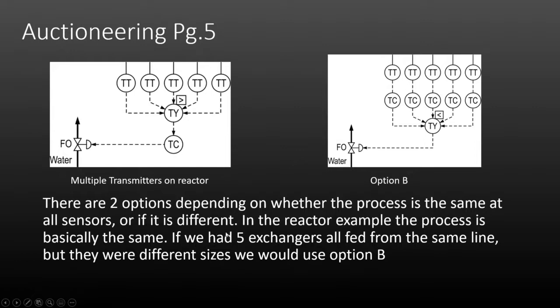The first is the easier, cheaper version with multiple transmitters on the reactor. Option B has multiple different controllers on the reactor, giving much more detailed control. In an exchanger application where all units are fed from the same steam line but are different sizes, you'd use a different controller on each one because they'd have different tuning parameters for each exchanger.